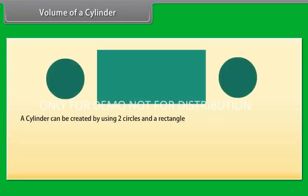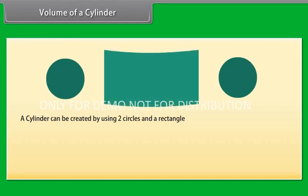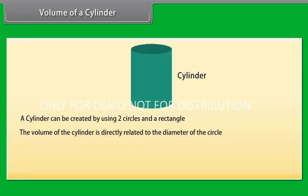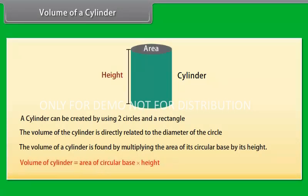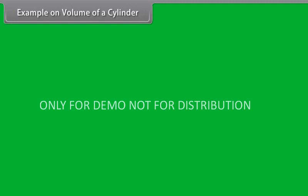A cylinder can be created by using two circles and a rectangle. The volume of the cylinder is directly related to the diameter of the circle. The volume of a cylinder is found by multiplying the area of its circular base by its height. That means the volume of a cylinder equals the area of the circular base times height.